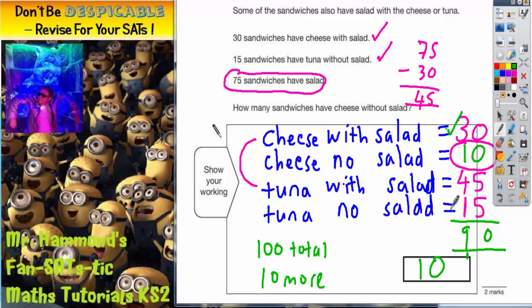Start to fill in the pieces of the jigsaw as you can do them. This 30 here is easy. This 15 here is easy. It's this 45 that's the key. 30 and 45 makes 75 that it says here. So it's got to be 45. And then you just need to figure out what's left from the 90 sandwiches so far to get you up to 100 sandwiches total. Final answer, 10 sandwiches have cheese without salad.